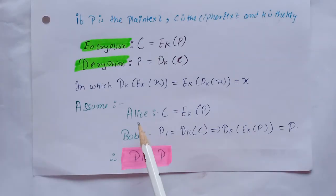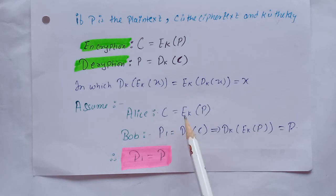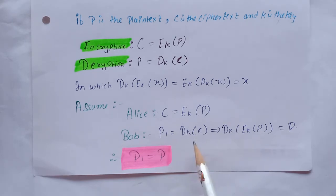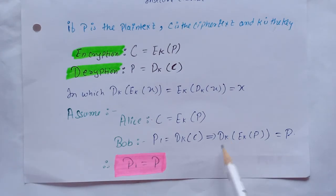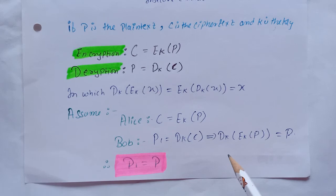For the sender, cipher text is created using Ek operated on plain text. At the receiver side, plain text is obtained using decryption algorithm which operates on cipher text. The decryption and encryption algorithms are inverses of each other. They cancel each other's effect if they are applied one after another on the same input.